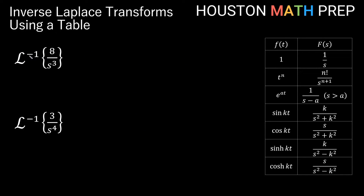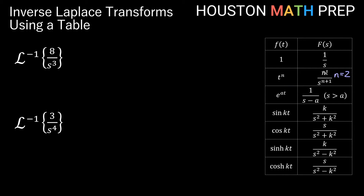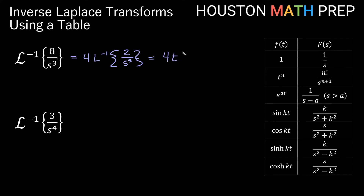Next, we have the inverse transform of 8 over s cubed. Again using the t to the n formula — in this case n is equal to 2, which gives us s cubed. We need 2 factorial on the top; 2 factorial is 2. So we need to make the top 2. Since I have 8, I factor out a 4: 4 times the inverse transform of 2 over s cubed. With n equals 2, that gives us 4t squared.